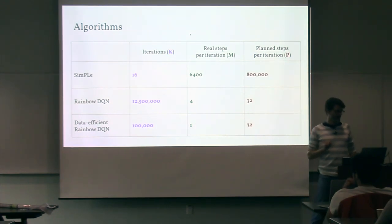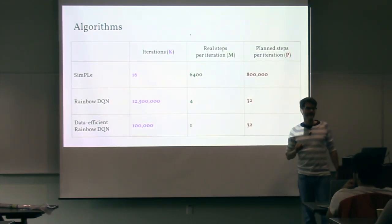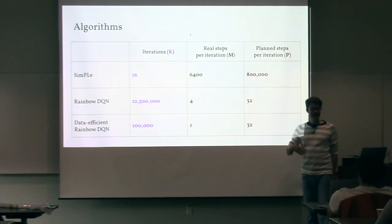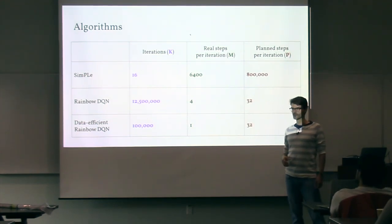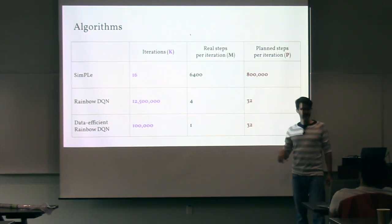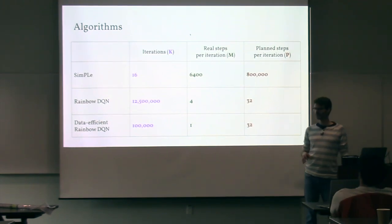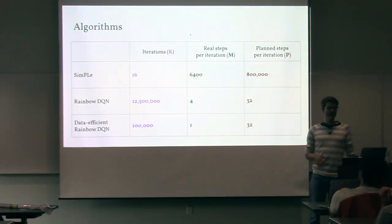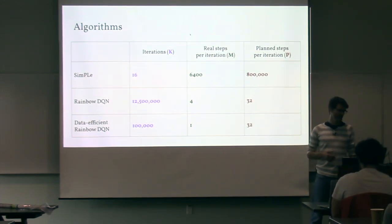The algorithm from that paper — they call it SIMPLE — does 16 iterations, where in each iteration they do about 6,000 steps in the real environment (in these Atari games), and then a whole lot of planning samples per iteration. In total there's a lot of compute, but not much data. That was their claim: it's data-efficient, not necessarily compute-efficient.